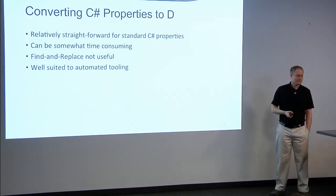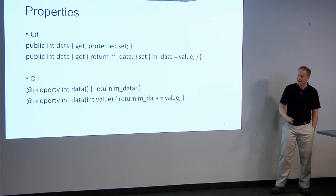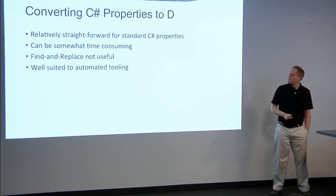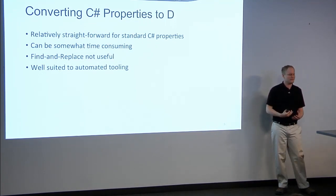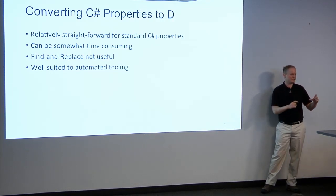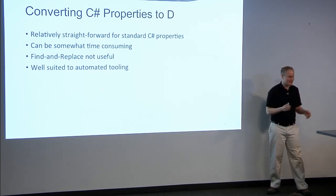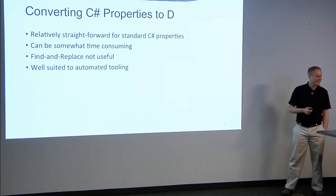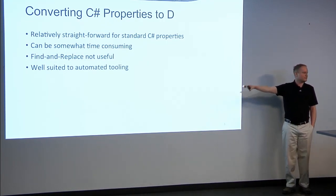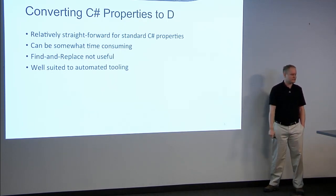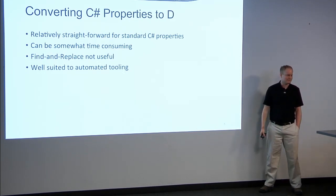Converting properties is pretty easy — you just break out your getters and setters and match them on a bracket level. But it can be a lot of time-consuming work. You can't really use find and replace; there's just that little bit of difference. If you're really good with regex you might be able to, but I'm not a regex guy. If there was an automated tool to do this, it would be fantastic, because C# uses properties everywhere — you've probably written a property or two a day.